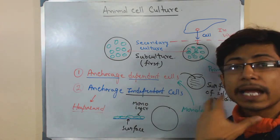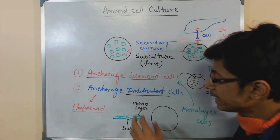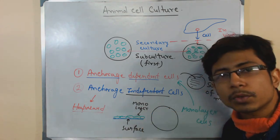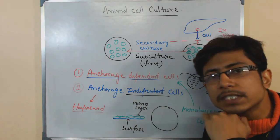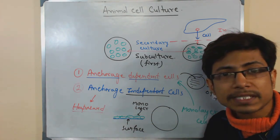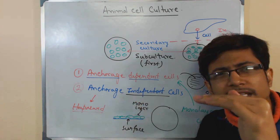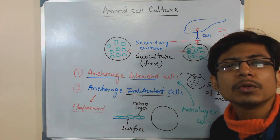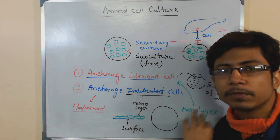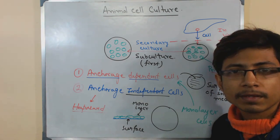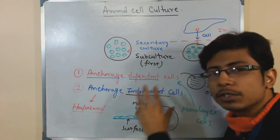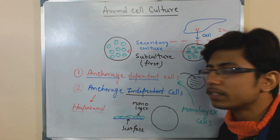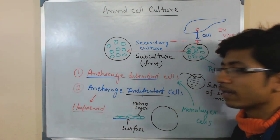The advantages of anchorage independent cells are that they are easy to harvest and can be grown to a very large number overnight. But for anchorage dependent cells, the advantage is that since they form monolayers, we can grow them on cover slips and place them easily onto microscopic slides because the monolayer is very thin — light can easily pass through. We can easily stain them and look at the cells beautifully under a microscope. So anchorage dependent is good for microscopy, while anchorage independent is easy to harvest and easy to grow and divide.